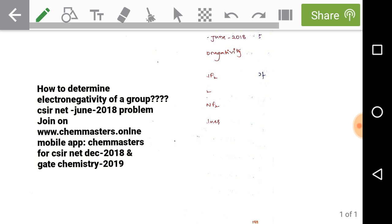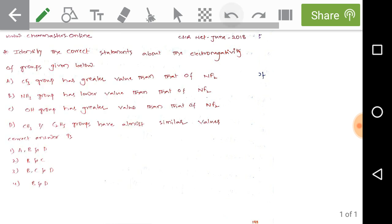Now identify the correct statements about the electronegativity of groups given below. We have: CF3 group has greater value than NF2; NH2 group has lower value than NF2; OH group has greater value than NF2; and CH3 and C2H5 groups have almost similar values. We need to pick the correct answer from the given options.